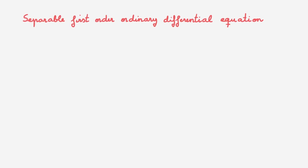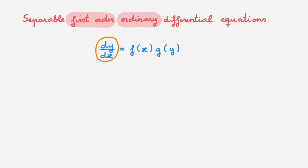In this video we consider separable first-order ordinary differential equations. The name is a bit of a mouthful, so what do we mean by that? If we check a textbook, what we find is that they are equations that can be written as the derivative of y with respect to x equal to f of x times g of y. The equation is first-order because the highest derivative that appears is a first derivative, and it is an ordinary differential equation because there are no partial derivatives. The family of first-order ordinary differential equations is vast, and in this video we will explore a small but important subset of such equations which are called separable.